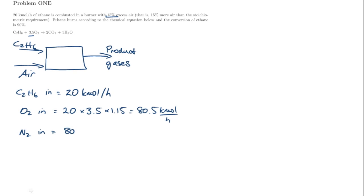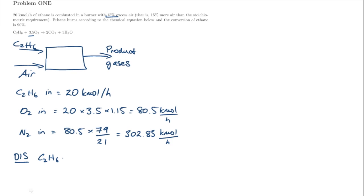Nitrogen flowing in we calculate from the ratio of nitrogen to oxygen in air, which is 79 over 21, and we get 302.83 kilomoles per hour of nitrogen. In our mass balance table we need the disappearance term for ethane. The conversion is 90%, so we multiply 20 kilomoles per hour by 0.9 to get 18 kilomoles per hour.